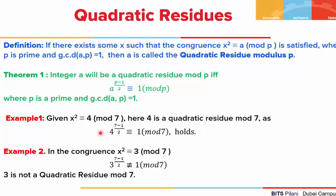Let's look at some examples where we will apply this theorem. In the first example, we are given x² ≡ 4 (mod 7). To find if 4 is a quadratic residue modulus 7, a is 4, so 4^((7-1)/2) = 4³ = 64. 64 minus 1 is 63, which is divisible by 7. So 4 is a quadratic residue mod 7.